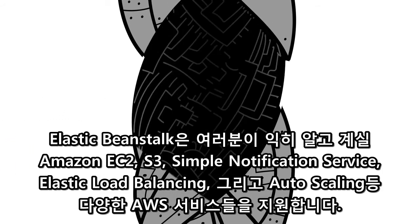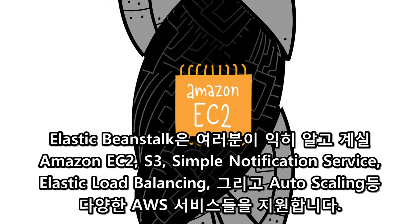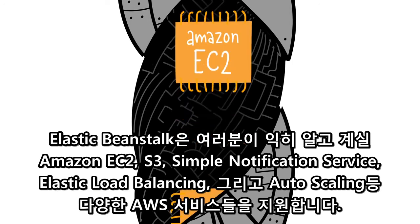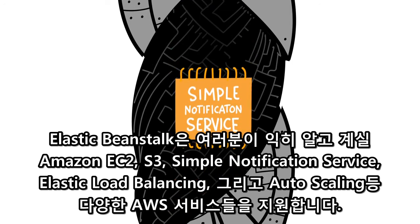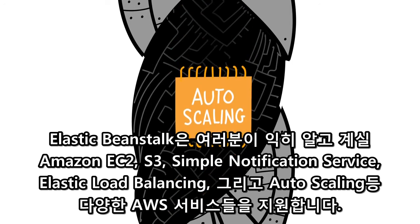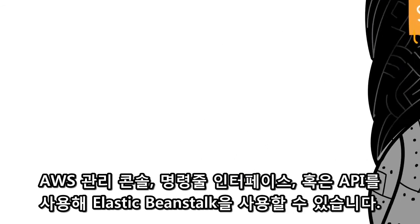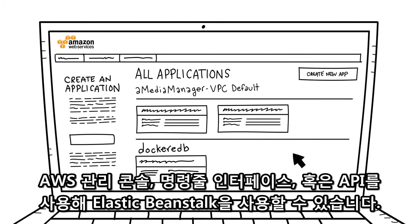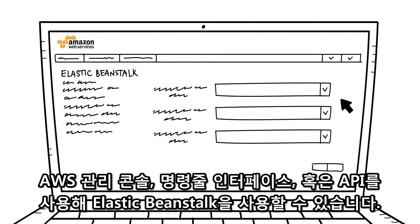Elastic Beanstalk leverages familiar AWS services such as Amazon EC2, S3, Simple Notification Service, Elastic Load Balancing, and Auto Scaling. It's easy to get started — you can use the AWS Management Console, the Command Line Interface, or the API.